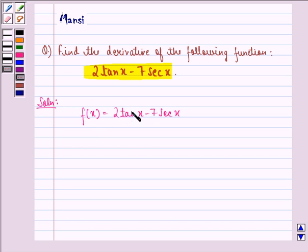f(x) equals this function minus this function, so f'(x) will be derivative of this function minus derivative of this function. That is 2 into d/dx of tan x minus 7 into d/dx of sec x.